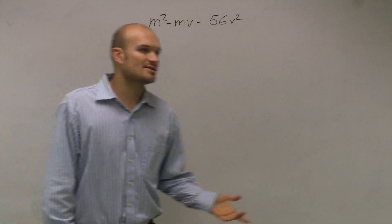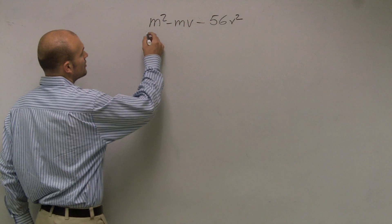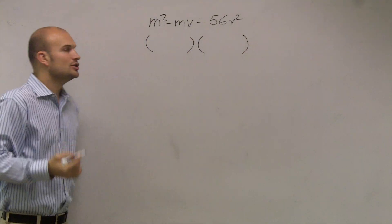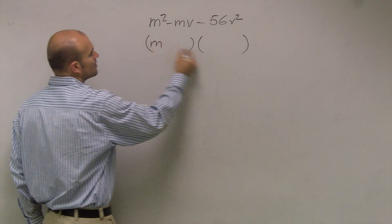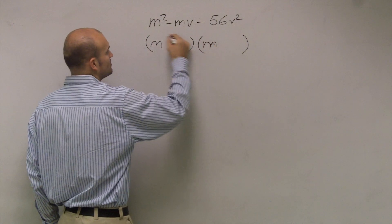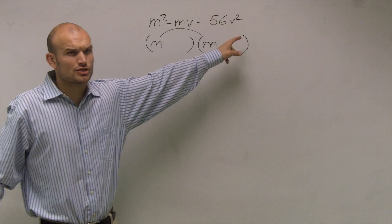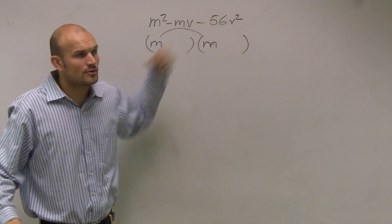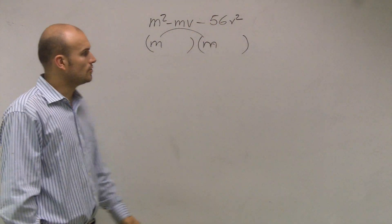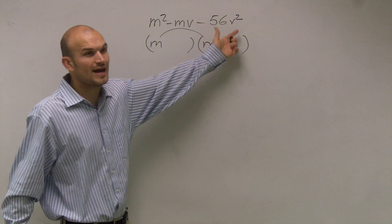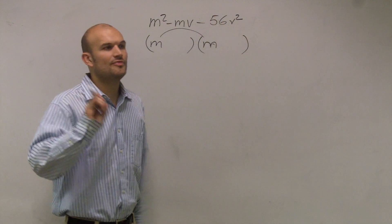But the next thing we notice is if we want to write this as two binomials, when we talked about working with FOIL, we knew that our first two terms multiplied to give us m squared. But then these last two terms are always numbers, right? And now we're throwing variables in there. So it's difficult because now we can say, well, now there's a v squared in there as well. Well, think about it this way.